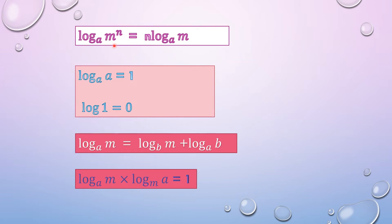Next, log of m to the power n to the base a will be written as n log of m to the base a. First thing, base remains the same: log of m to the power n.